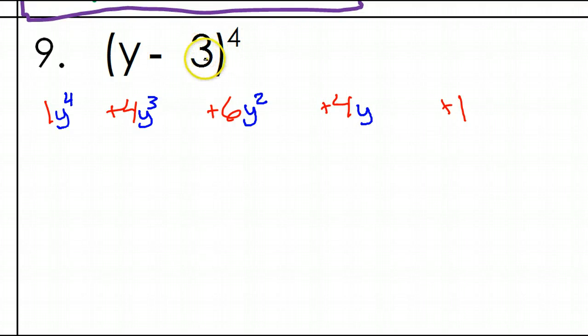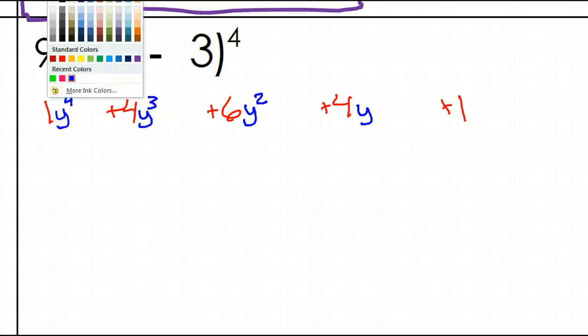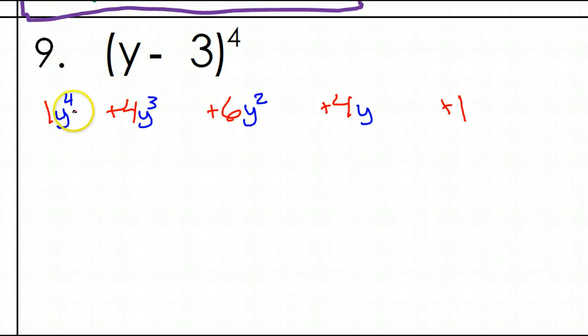Then, we look at the second term. And go ahead and look at this as negative three, you guys. Negative three. So, the negative three is on the right, so we start on the right with it. And again, we start with the degree. So, it will be negative three to the fourth power. And then, negative three cubed. Negative three squared. And then, just a plain negative three. And then, the last one doesn't get any.